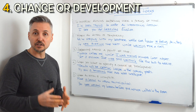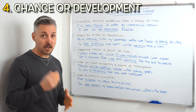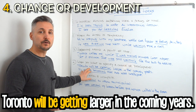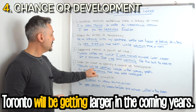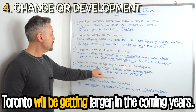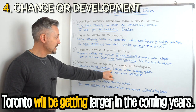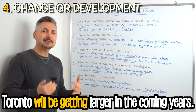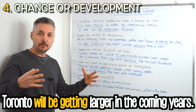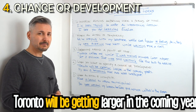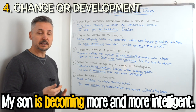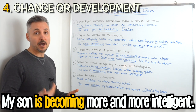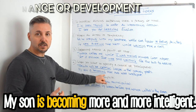The fourth usage: when you want to specify a change or development. 'Toronto will be getting larger in the coming years.' The tense here is future continuous — 'will be getting larger in the coming years.' That's 'will be' plus the verb with -ing: 'will be getting.' So Toronto will become larger — it's going to change and develop. Another example: 'My son is becoming more and more intelligent.' That's a change, and we use present continuous to specify that change.